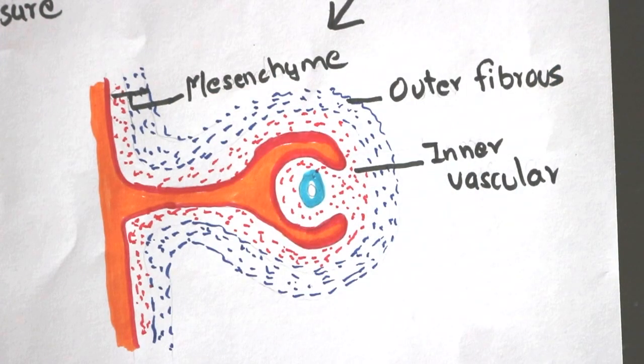In the brain, the outer fibrous layer gives rise to dura mater and the inner vascular layer forms arachnoid mater and pia mater. However, these layers covering the optic cup form the structures of the eye.